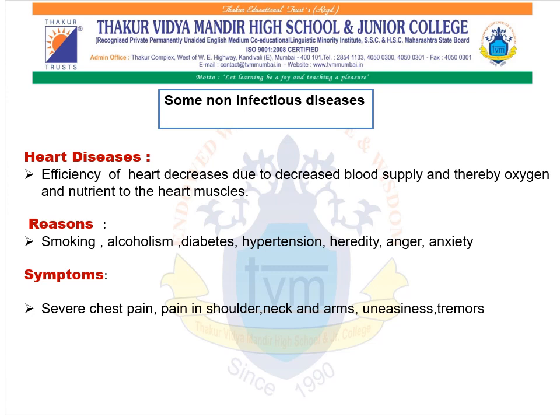The next non-infectious disease we are going to study about is heart disease. The efficiency of the heart decreases due to decreased blood supply, and thereby oxygen and nutrients, to the heart muscles. Due to this, the heart has to perform more work, which leads to stress on it and may cause a heart attack. If anyone has a heart attack, immediate consultation of a doctor and treatment is necessary. Reasons for heart diseases are smoking, alcoholism, diabetes, hypertension, heredity, anger, and anxiety. Symptoms for heart diseases are severe chest pain, pain in the shoulder, neck and arms, uneasiness, and tremors.